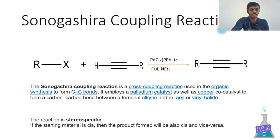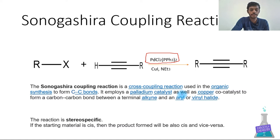The Sonogashira coupling reaction is a cross-coupling reaction used in organic synthesis to form carbon-carbon bonds. It employs a palladium catalyst, similar to the Heck coupling. A copper co-catalyst is also used. If you have not watched, I have already made a video on Heck coupling — I am giving the link in the description box, please watch.